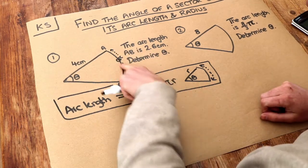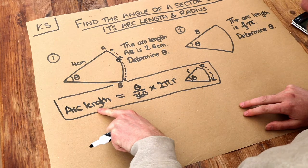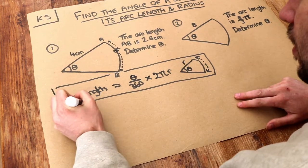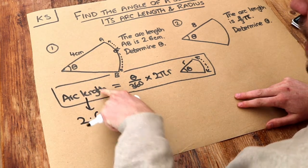Now we can just substitute what we know into this formula. We're told that the arc length of this circle is 2.6, so that length is 2.6. So 2.6. I tend not to put the units in the formula.